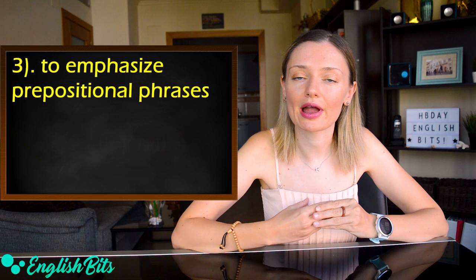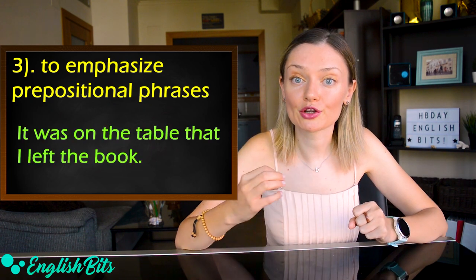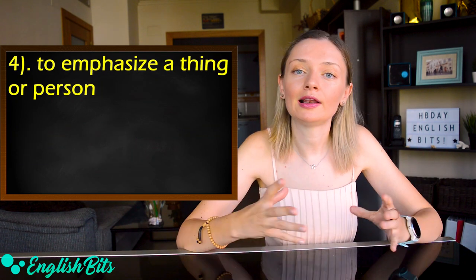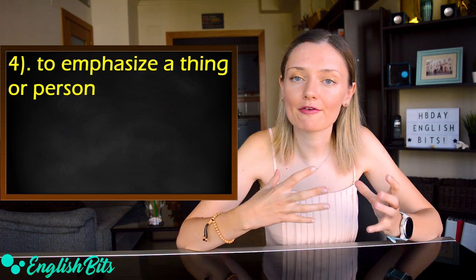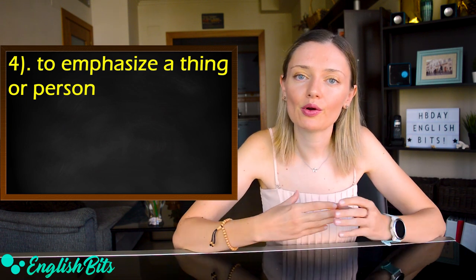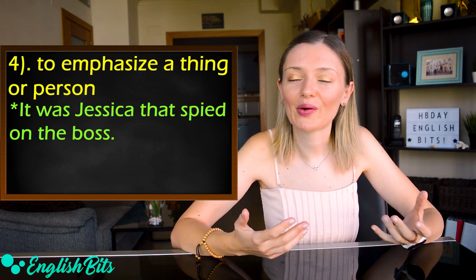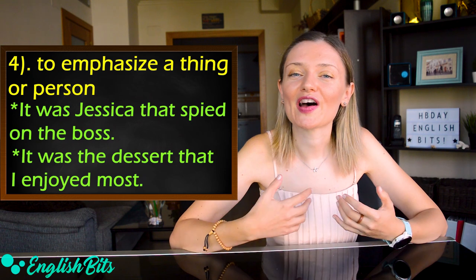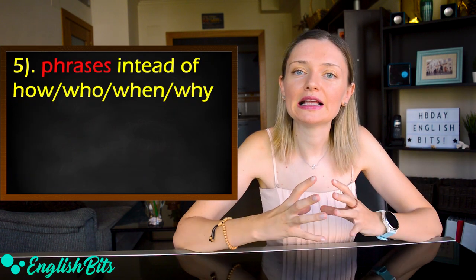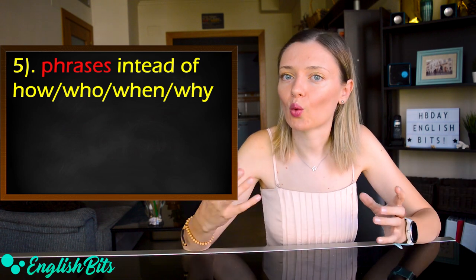Thirdly, to emphasize prepositional phrases. For example: 'It was on the table that I left the book.' And finally, we can use it to emphasize a person or thing. For example: 'It was Jessica that spied on the bus.' And: 'It was the dessert that I enjoyed most.' We can also use phrases instead of question words like how, who, when, or why.